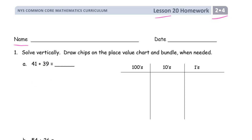For addition and for subtraction, in both of those, you're going to need room above either your minuend or your top addend. So give yourself some room. You don't need a lot of room, but you need some.